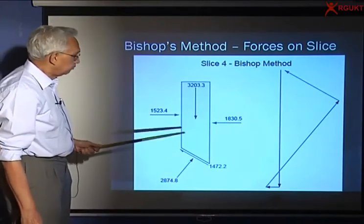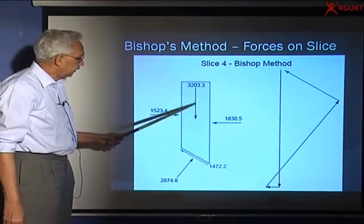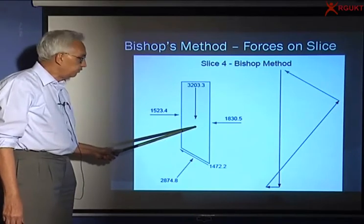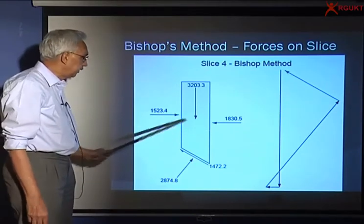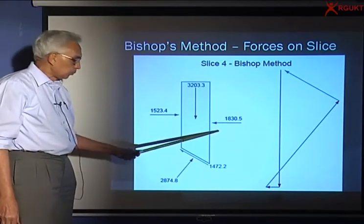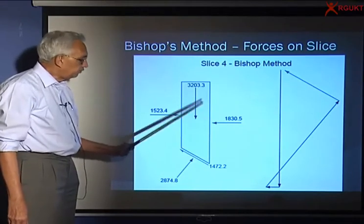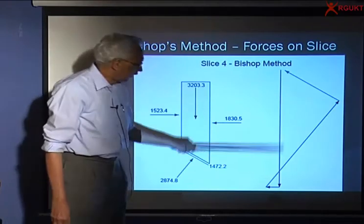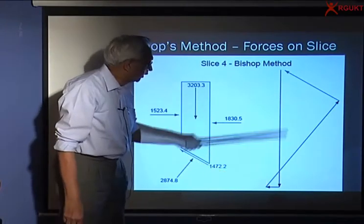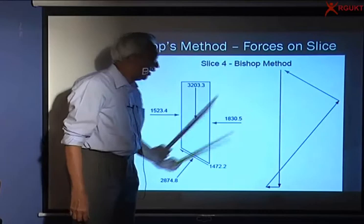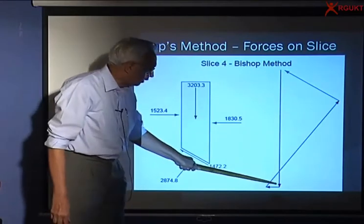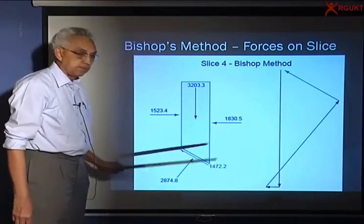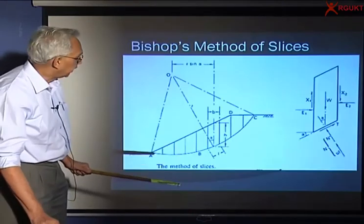This is the Bishop's method, according to which this is, let us say, the gravity force, and these are the inter-slice forces. And here is the normal force, and if I take this into consideration, you can see that vertical force and the normal force, so the strength required is less, because you already have a certain component which is opposing the sliding.